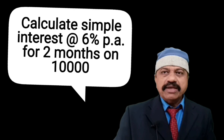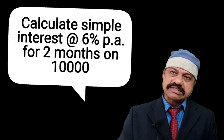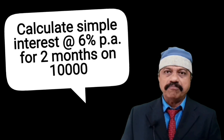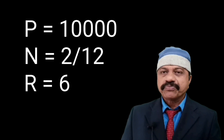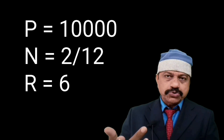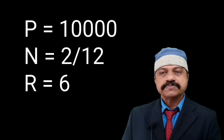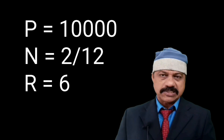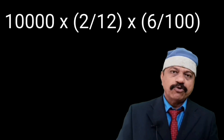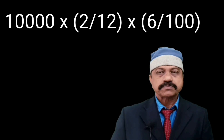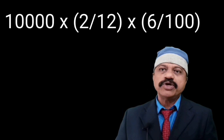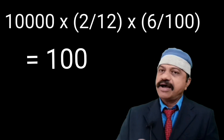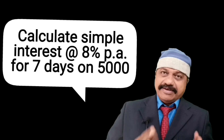Example 3: calculate simple interest at the rate of 6% per annum on 10,000. Here P is equal to 10,000, N is equal to 2 months, that is 2 divided by 12, and R is equal to 6. Therefore, PNR divided by 100 is equal to 10,000 into 2 divided by 12 into 6 divided by 100. The answer is 100.